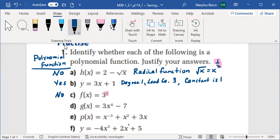If we take a look, d, g(x) = 3x^4 - 7, this is a polynomial function, it is of degree 4, leading coefficient 3, constant is -7.